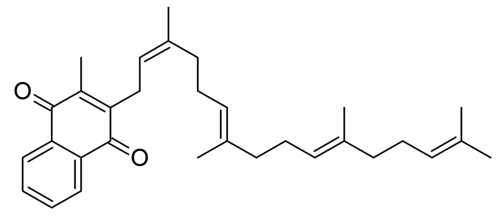It is marketed for the latter indication in Japan by Eisai Company under the trade name Glakay. Menatetranone or MK-4 is one of the nine forms of vitamin K-2.